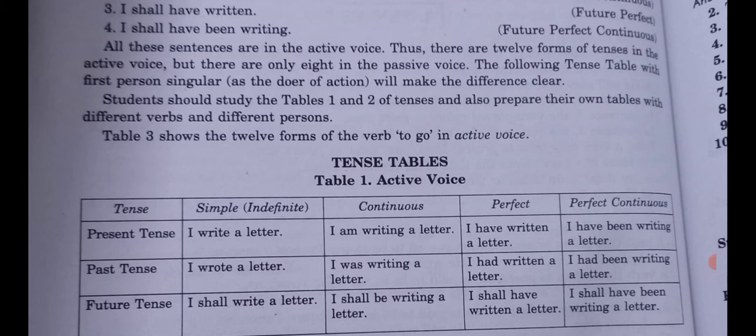In simple present, example: 'I write a letter.' For present continuous, the rule is is/am/are plus V1 plus -ing. Example: 'I am writing a letter.' For present perfect, use has or have plus the third form of the verb. Example: 'I have written a letter.' For present perfect continuous, has or have plus been plus V1 plus -ing.